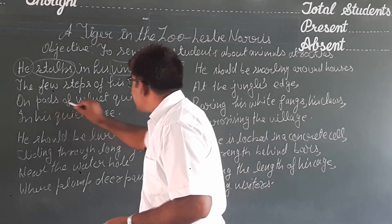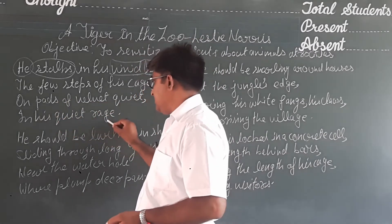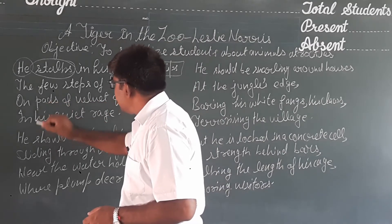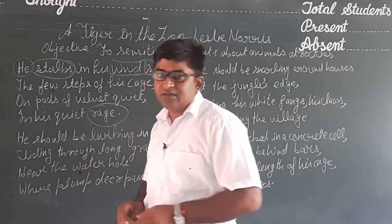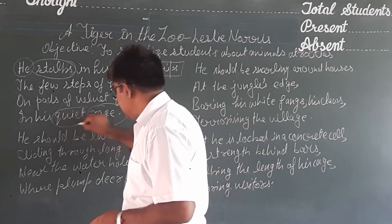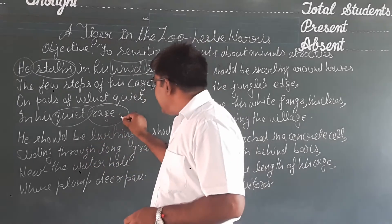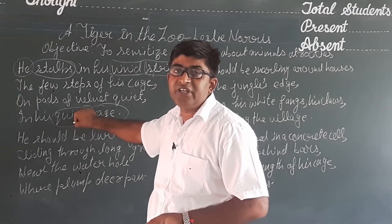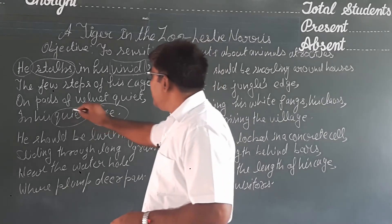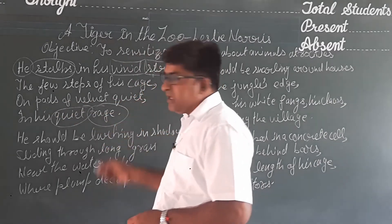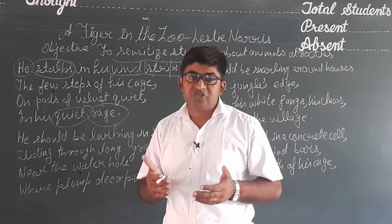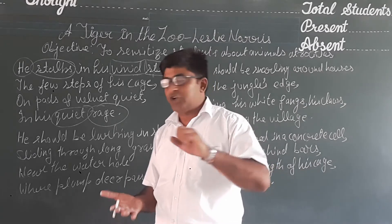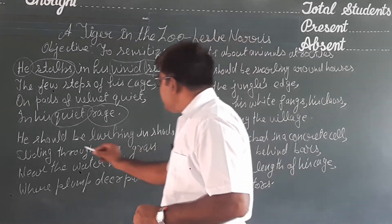The poet raises the point that the tiger is in a rage — meaning anger — but he is quiet. The tiger is angry yet quiet because he is enclosed in the enclosure. He walks on his pads of velvet; his paws are very soft, yet under his claws there is a velvet-like sharpness.